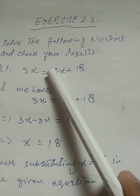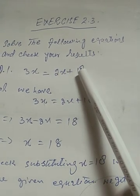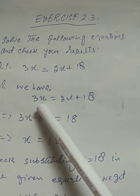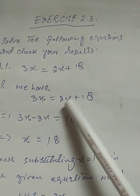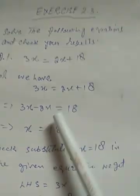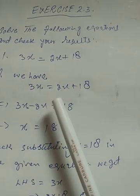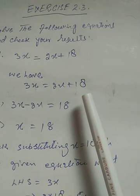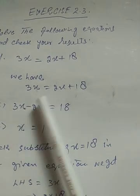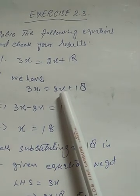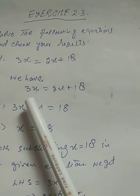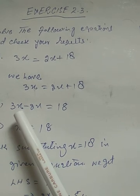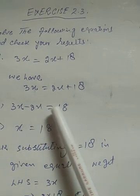3x is equal to 2x plus 18. We have 3x equals 2x plus 18. Transposing 2x to LHS, the equation is 3x minus 2x equals 18.